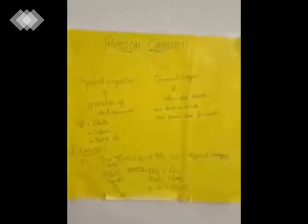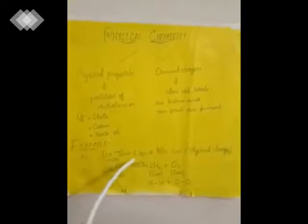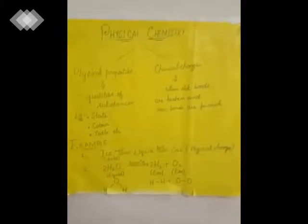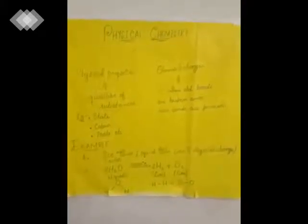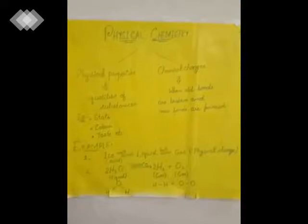Through a very simple example we can easily distinguish between physical change and chemical change. The first example is ice. When we take ice we know that it is water but present in the solid state. When it is melted, ice changes into the liquid state, and when it is boiled it converts into the gaseous state. Here water is present in all three states as H₂O. Only the physical change occurs because only the state of matter changes but the bonds are not broken. That is the physical change.